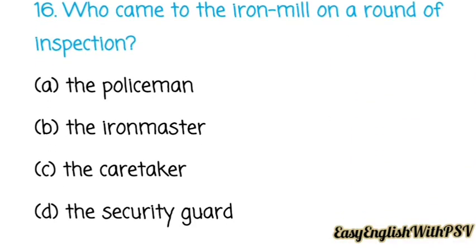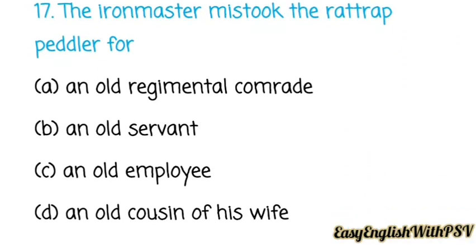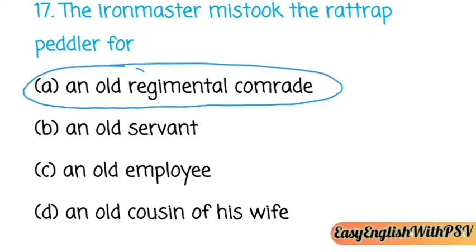Question number sixteen: Who came to the iron mill on a round of inspection? The owner — the iron master. Question number seventeen: The iron master mistook the rat trap peddler for his old regimental comrade Nils Olaf. The correct option is: an old regimental comrade Nils Olaf.